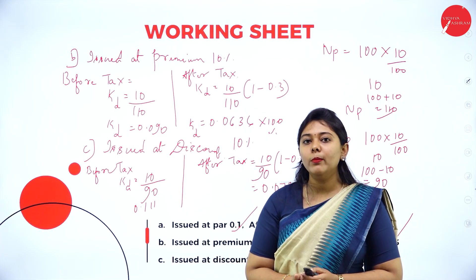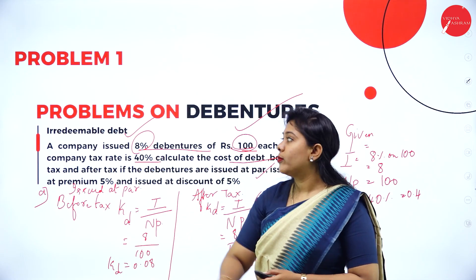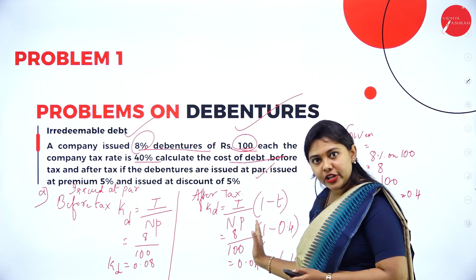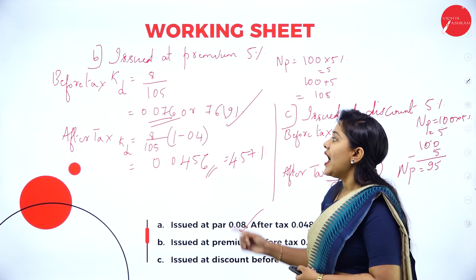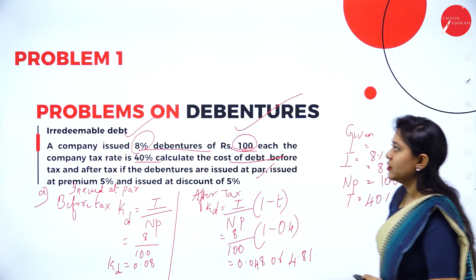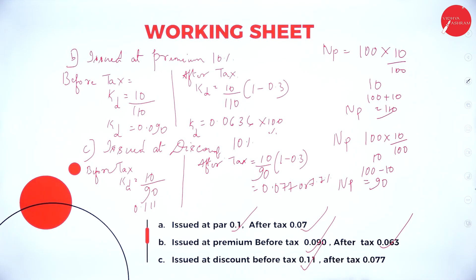So this is how you solve the problem for irredeemable debt. We are solving problems on debenture before tax and after tax using the formula, issued at par, issued at a premium, and at a discount. Kindly take a screenshot of problem number one and problem number two. Hope the problems were very easy and you people have learnt it. In the next class, we will be solving more problems on irredeemable debenture. Stay tuned, stay blessed. A smile is the biggest jewel you can wear. Keep smiling. Thank you, bye-bye.